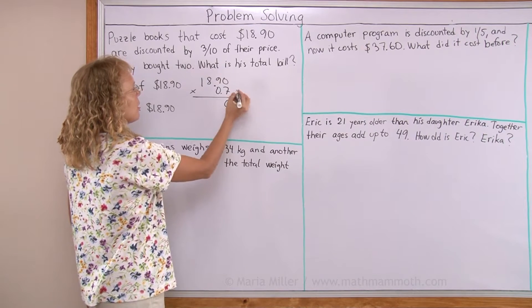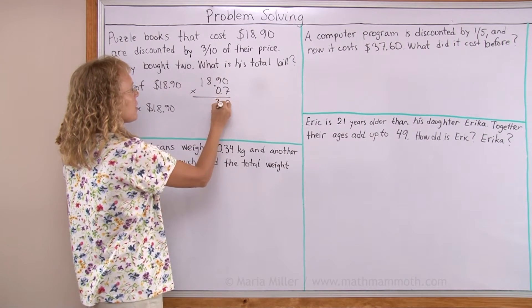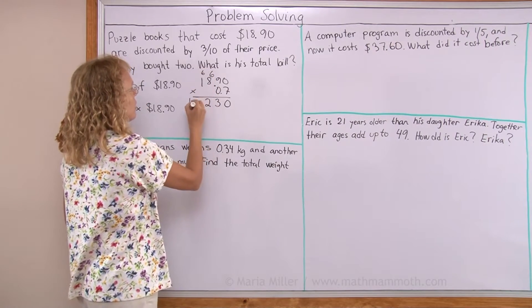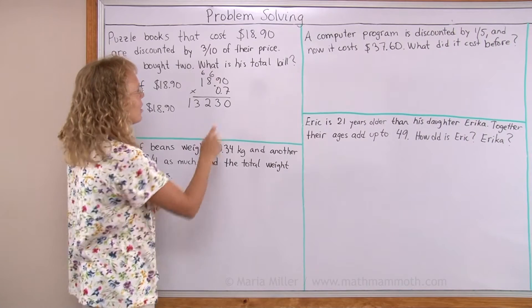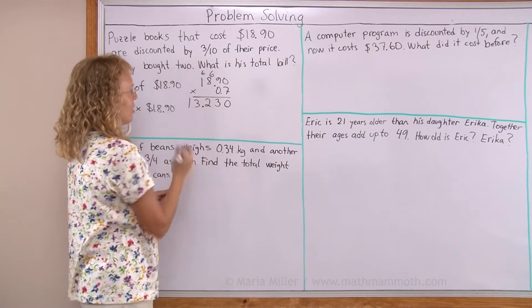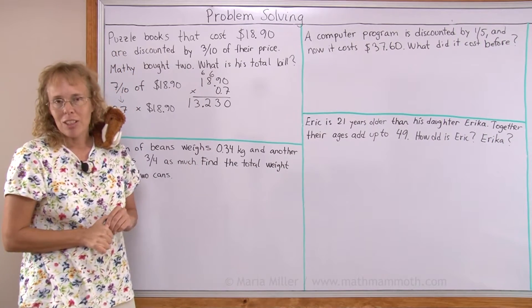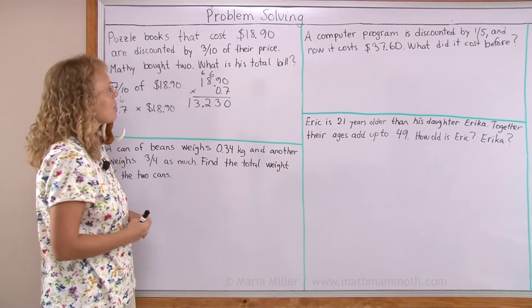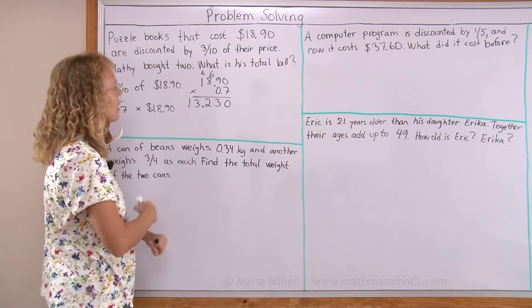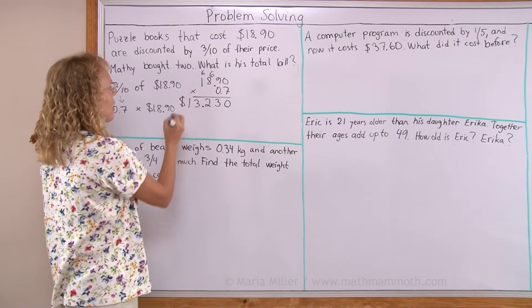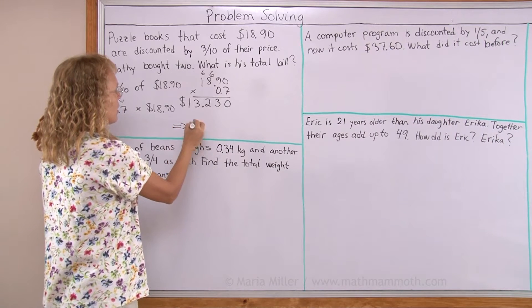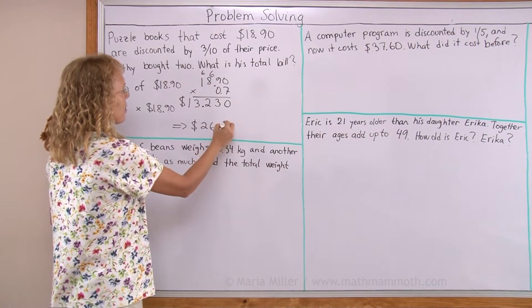So here seven times zero, seven times nine is 63 and then we have 56 plus six is 62 and then 13. And now the decimal point into the answer. There's one decimal digit here and two here so three in the answer. Notice also that when we're multiplying by decimals we don't need to line up the decimal points. It's only necessary in addition and subtraction. So here's the price $13.23 and since Matty buys two his bill will be $26.46.